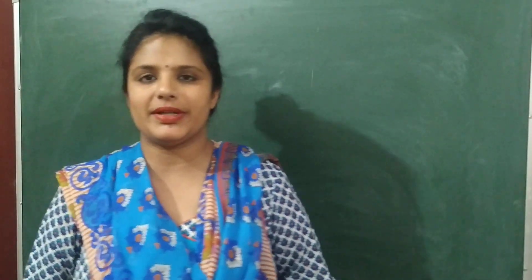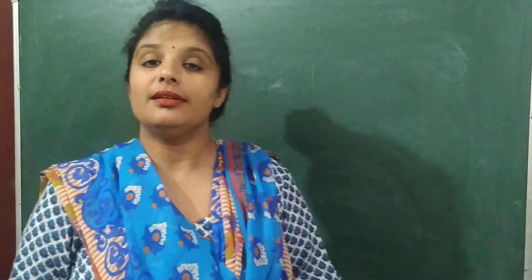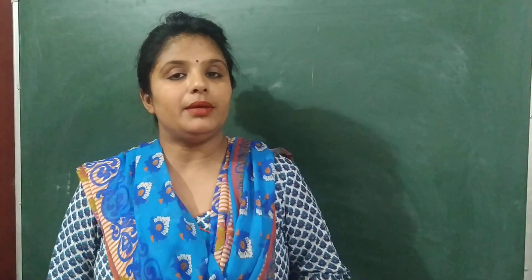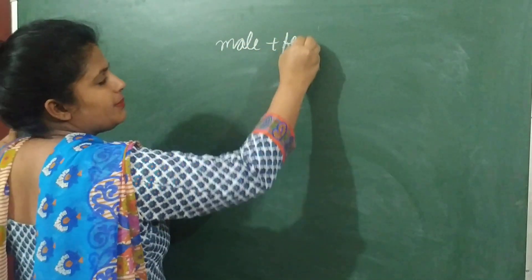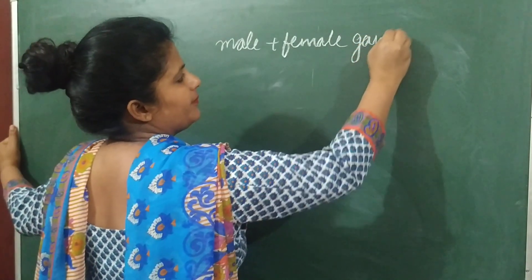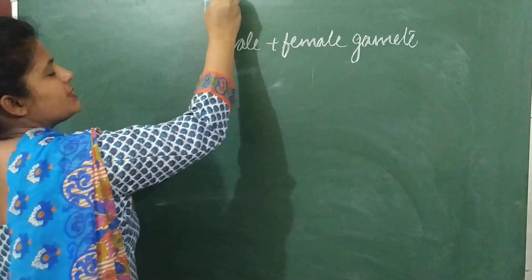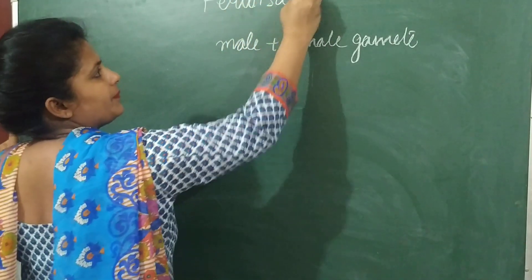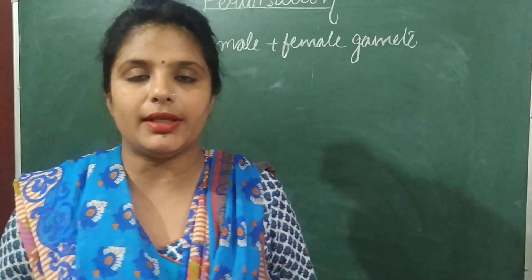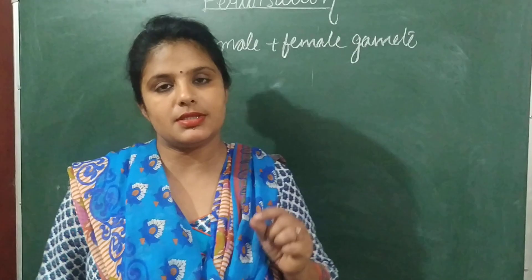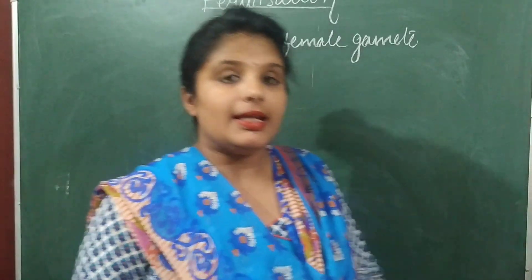Hello students, today's topic is fertilization. Fertilization plays a very important role in plant life because of fertilization only we are able to produce new plants. Fertilization is the fusion of male and female gametes. In plants, pollen grains transfer from anther to stigma — that is called pollination — and after pollination, the next step is fertilization, which is a very important step.